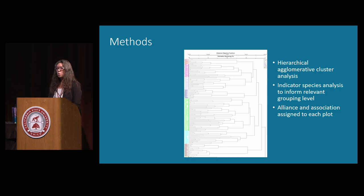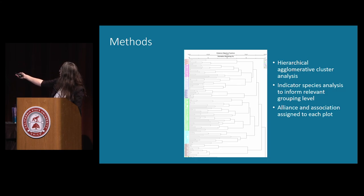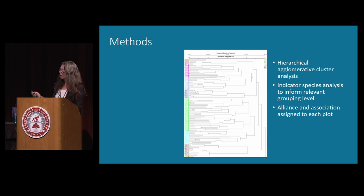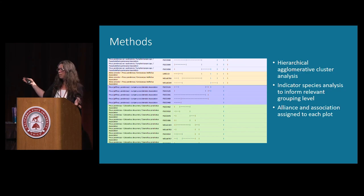Because I'm going to be talking about new alliance and association concepts, I want to quickly describe our statistical process. Our releve and rapid assessment protocols are analyzed using a multivariate analysis called hierarchical agglomerative cluster analysis, which produces a dendrogram. Plots run down the left side and are clustered based on similarity in species composition. We use a secondary analysis called indicator species analysis to determine the level of grouping for defining our alliances and associations.